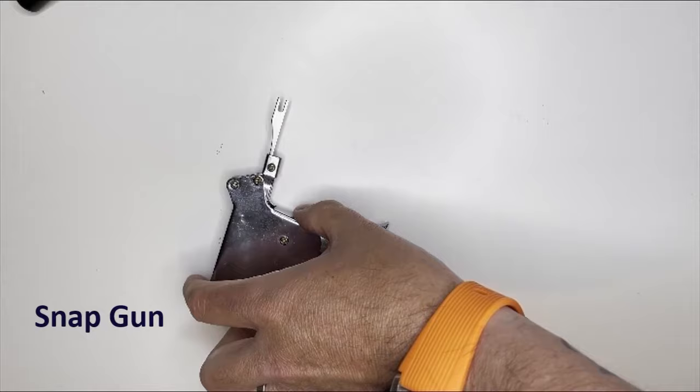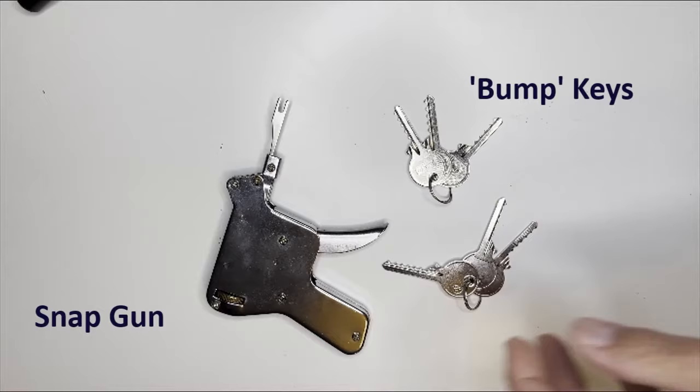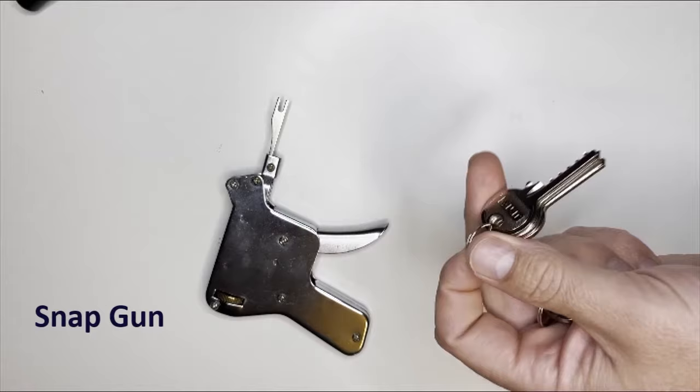The other things we can use is something called a snap gun and also things called bump keys. There's plenty of information on the internet about these. We've got different sets of different bump keys for different cylinder pins and also different lengths and key sets, but they're always part of the attack kit when we're going out doing assessments against locks.